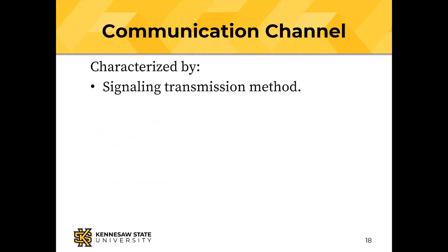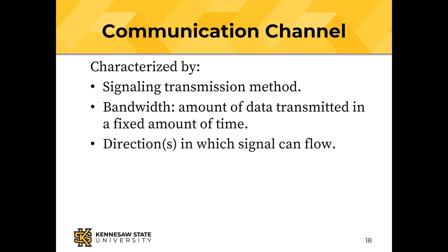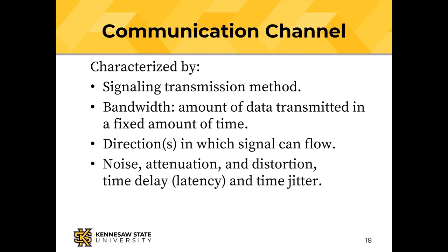A communication channel is characterized by: signaling method (copper wire or radio), bandwidth (data per second), direction (simplex, half-duplex, full-duplex), noise, attenuation, distortion, time delay, and time jitter.